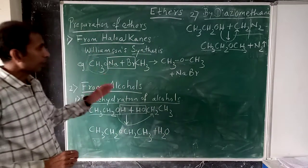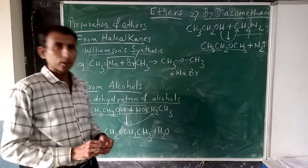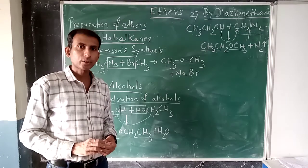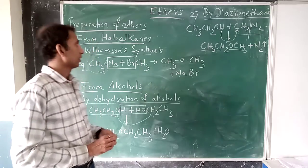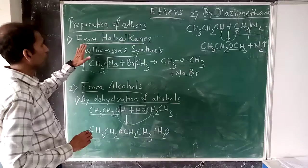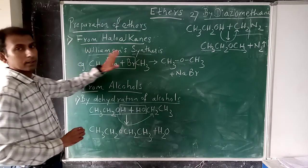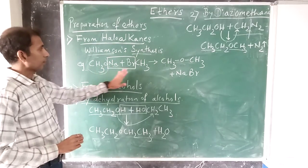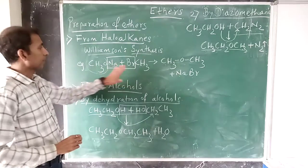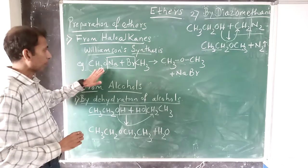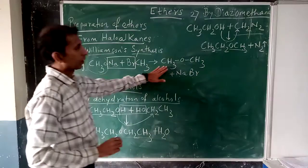So today we have covered this particular concept of methods of preparation of ethers. First, prepare ethers by Williamson's method from haloalkanes. Haloalkanes are treated with sodium alkoxide - it is methoxide - and you will get ether.